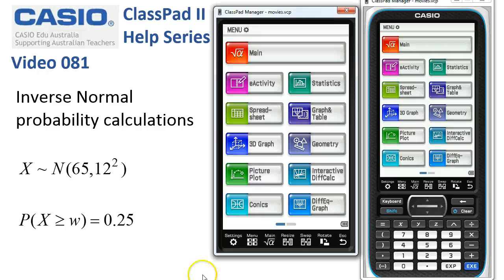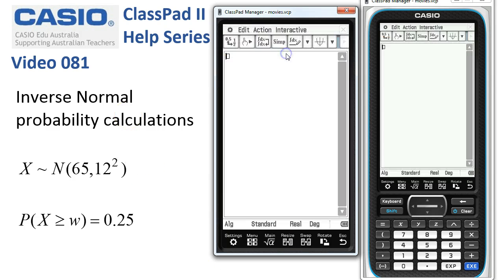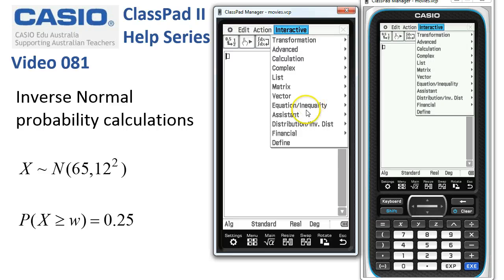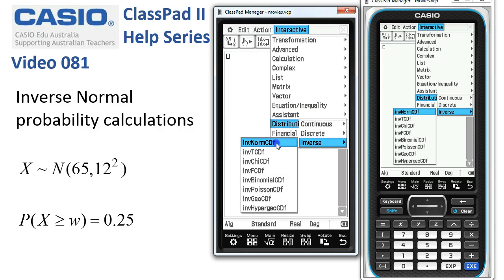Inverse normal probability calculations. We'll start in main and under interactive distribution inverse. Here we go. Inverse normal cumulative distribution function.